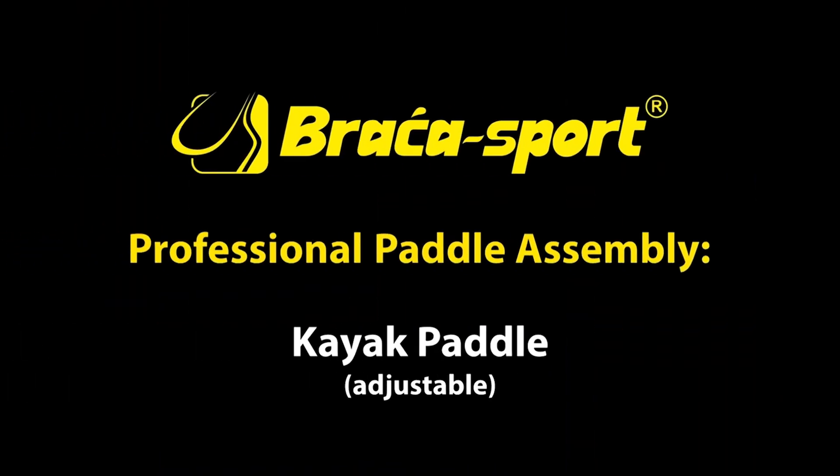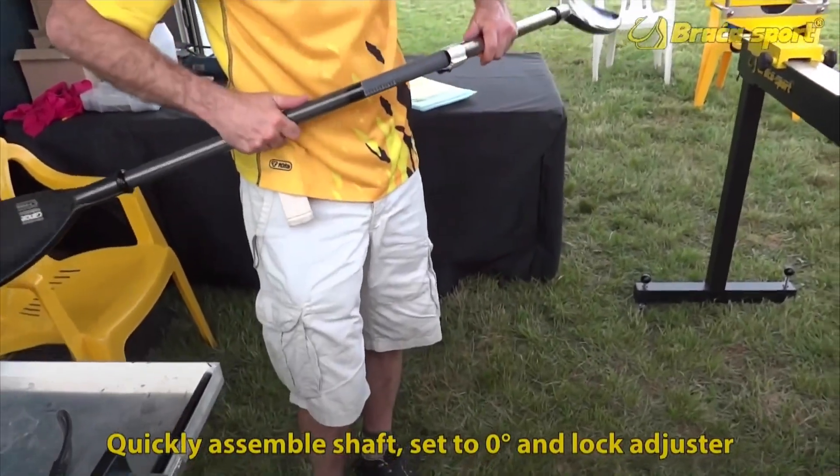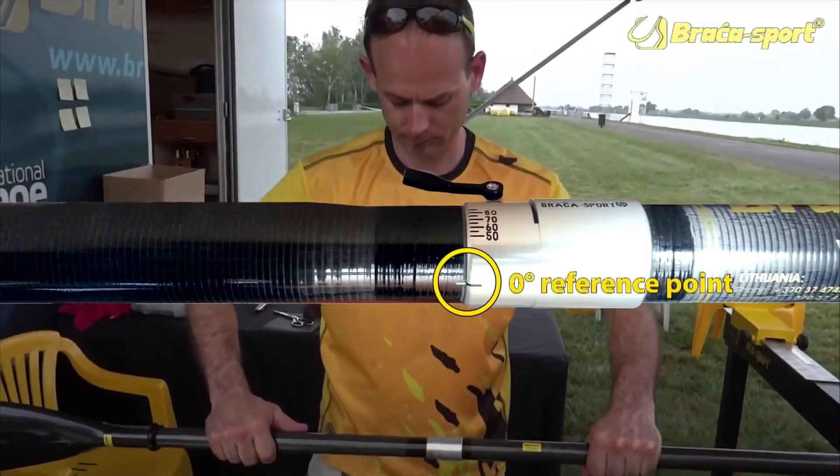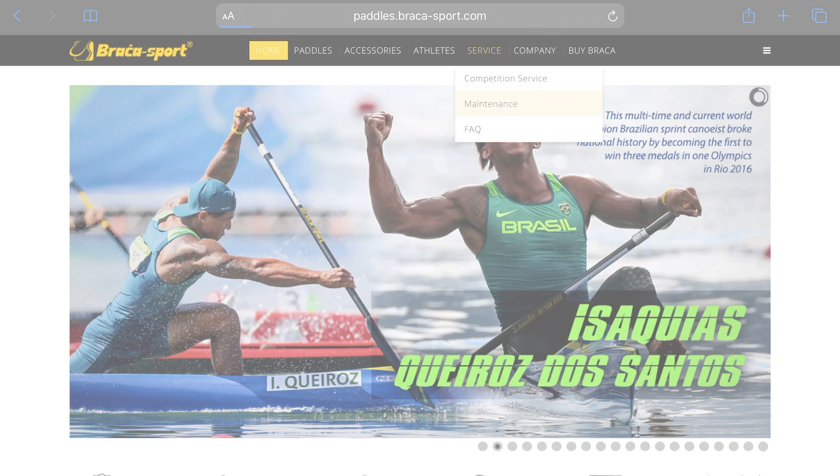Before we start, make sure that you follow the instructions on the adjustable kayak assembly tutorial, which shows you how to glue on the blades correctly. You can find the video along with all other resources on our homepage under Service Maintenance.